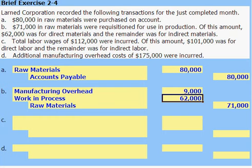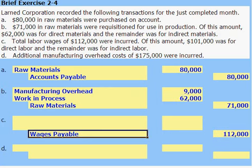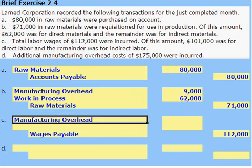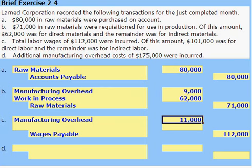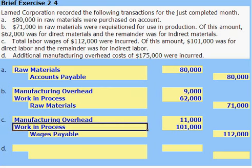Total labor wages of $112,000 were incurred. This will be a credit to wages payable, or we might credit cash if we actually paid the wages. Of this amount, $101,000 was for direct labor and the remainder, or $11,000, was for indirect labor, which would be manufacturing overhead. We will debit manufacturing overhead for the $11,000, and we will increase work in process for $101,000 with a debit balance to work in process.